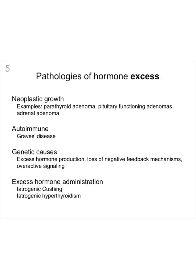Endocrine tissue can also be accidentally activated — for instance, autoimmune activation of the thyroid produces a disease called Graves' disease. There can also be genetic causes of excessive hormone production, such as loss of negative feedback molecules causing too much hormone signaling. Excessive hormone administration can also cause problems — for instance, treatment by hormone injection can lead to iatrogenic Cushing's or iatrogenic hypothyroidism.